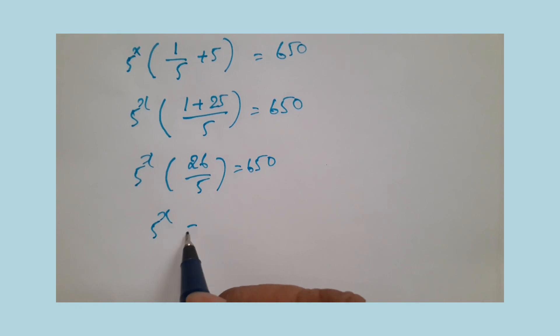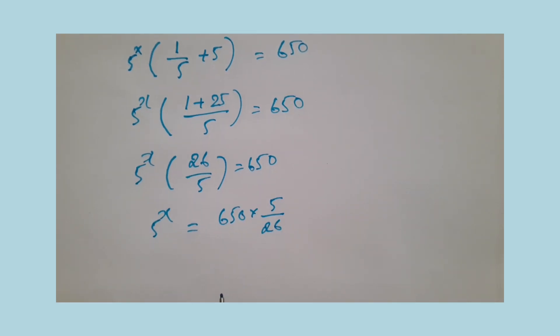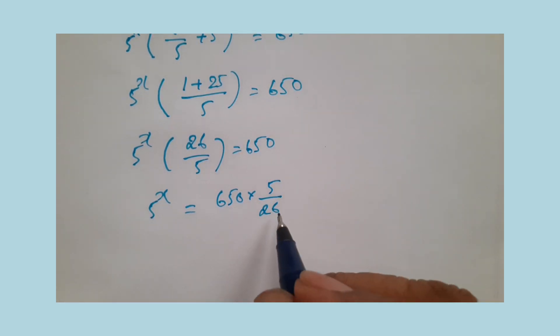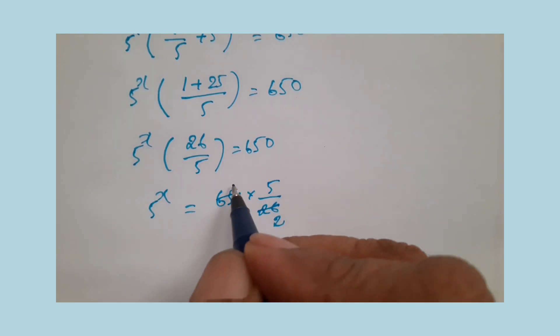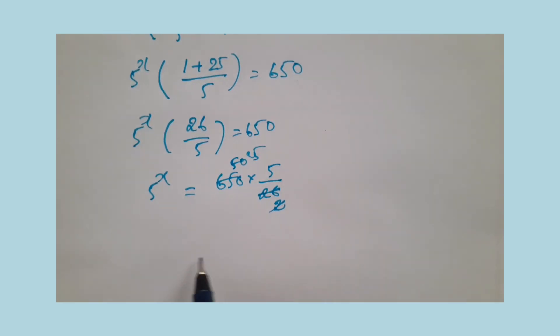What is 5 power x? 5 power x equals 650 times 5 divided by 26. Cancel the terms: 5 power x equals 125.